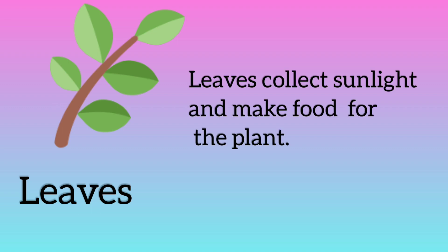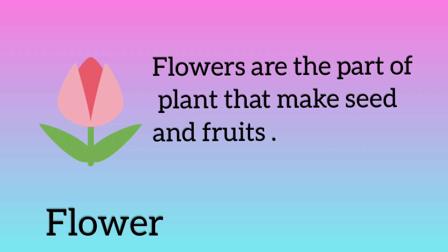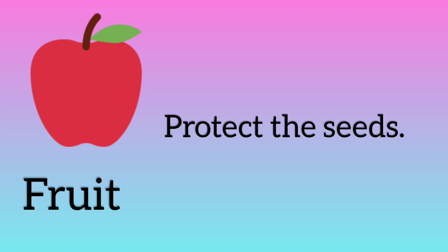There are mainly five parts of a plant. First part is leaves. Leaves collect sunlight and make food for the plant. Next part is flowers. Flowers are the part of a plant that makes seeds and fruits. Next part is fruit, which protects the seeds.